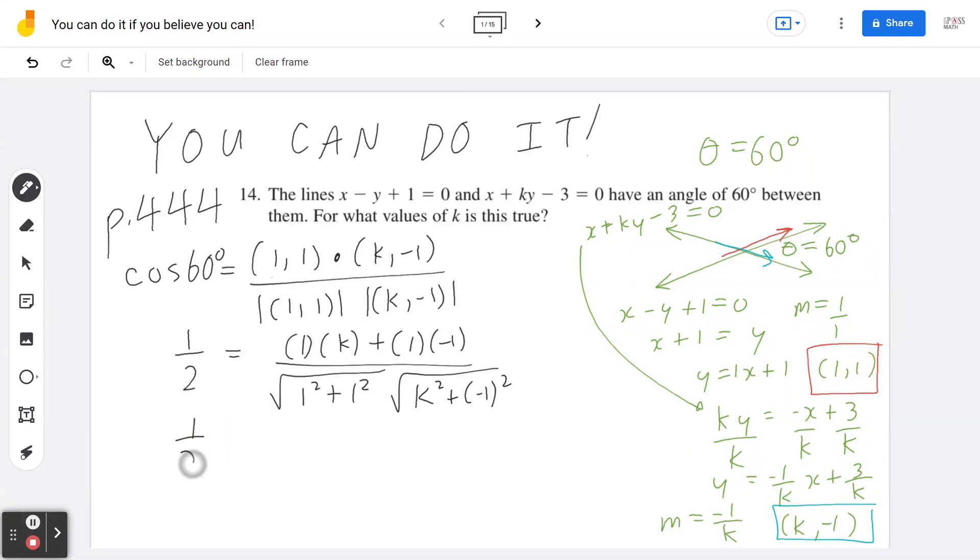1 over 2 equals k minus 1 divided by root 2 times the square root of k squared plus 1. If you think about 2, it's the same as root 2 times root 2, so you can cross out a common root 2. If I cross multiply, then I get the square root of k squared plus 1 on the left, which equals root 2 times (k minus 1).